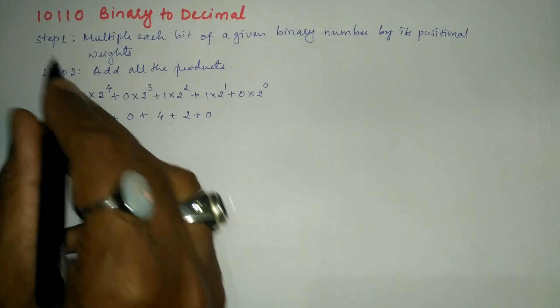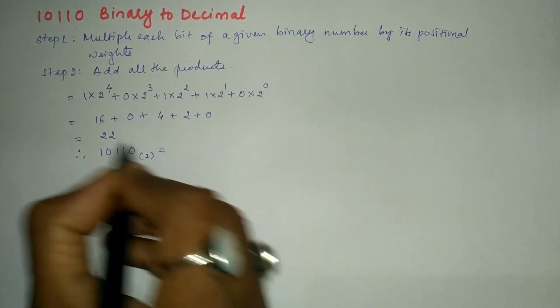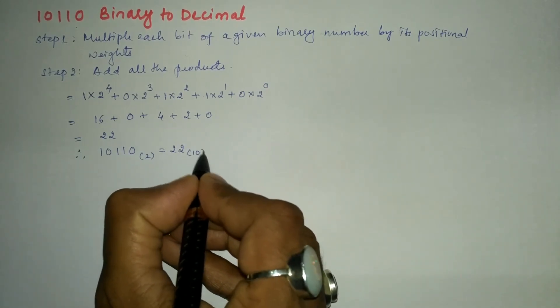...write therefore the given binary number 10110 to the base 2 is equal to 22 to the base 10.